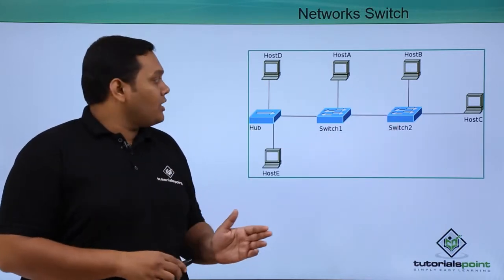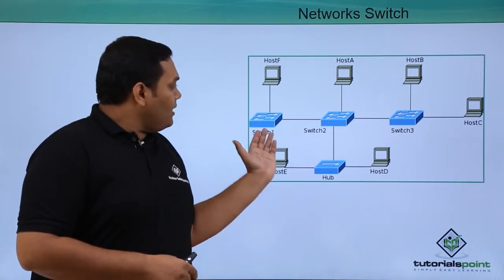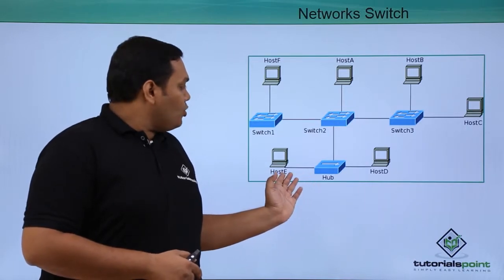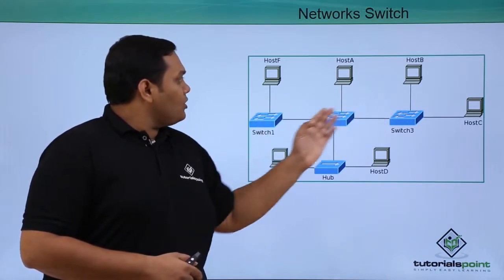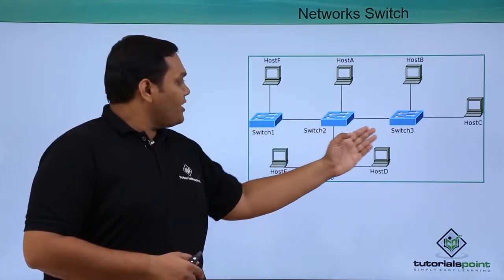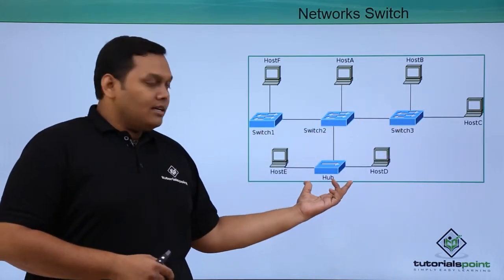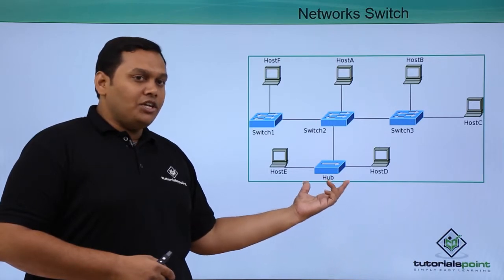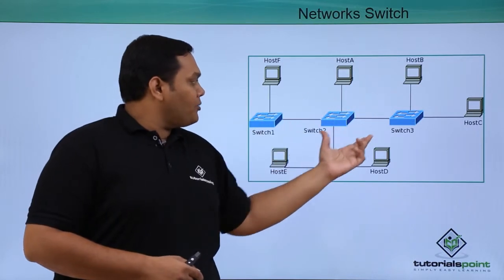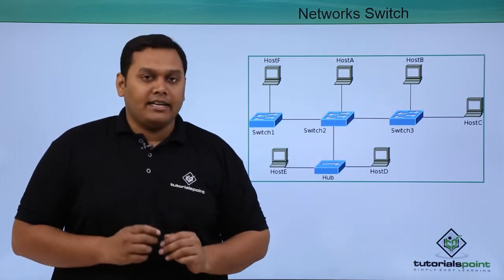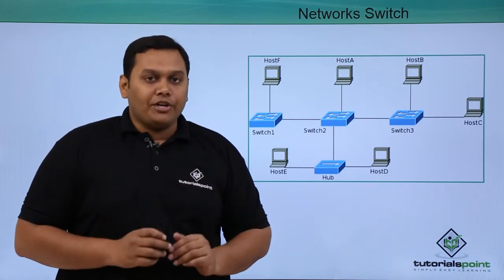Here is a more complicated network with one hub and three switches. Host E and Host D are connected through a hub, and this network is connected to the other network through Switch 1, Switch 2, and Switch 3, where Host F, Host A, Host B, and Host C are connected. The hub segment forms a collision domain, while the switches each provide a single collision domain and data is shared between all these hosts simultaneously. We will be discussing about the network router in the next video.